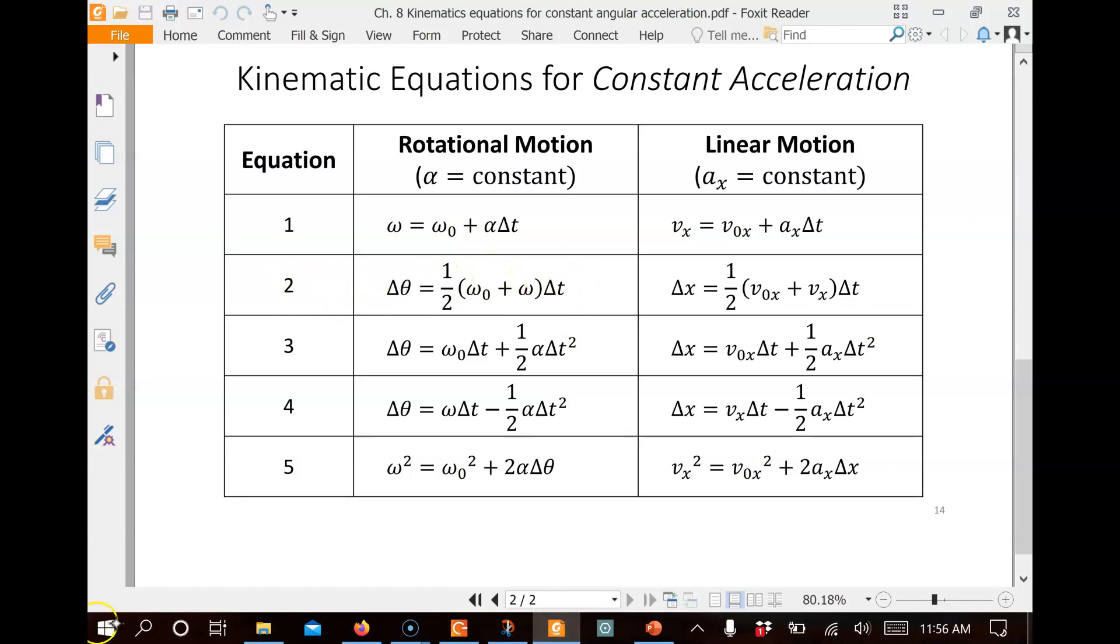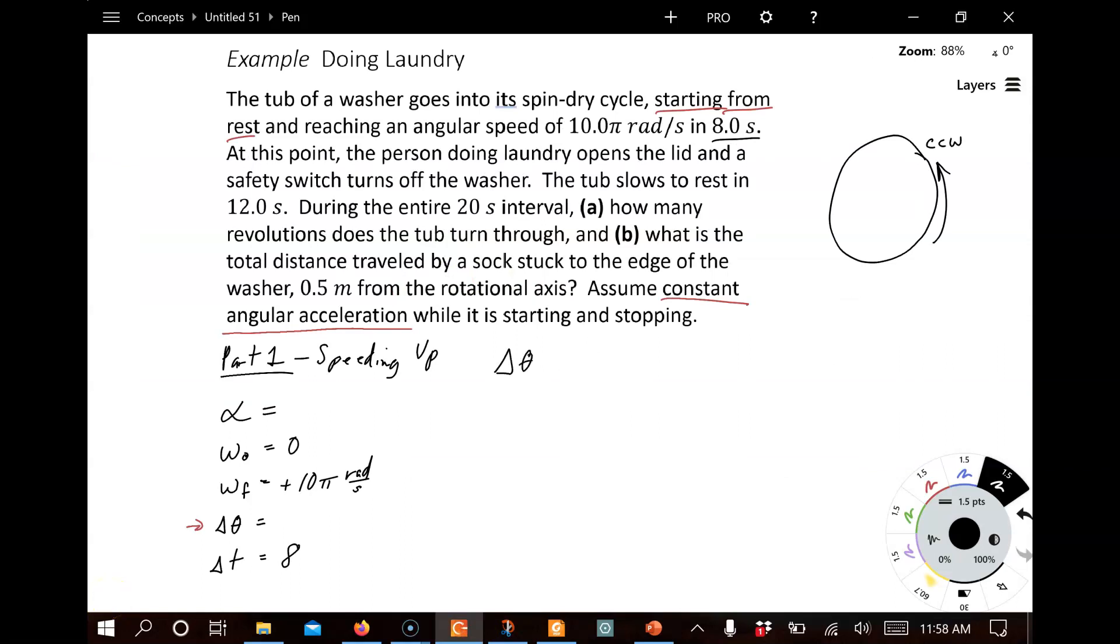Let's go ahead and write that down. So, Δθ equals one-half ω_initial plus ω_final times Δt. And we know that the initial angular velocity is zero. Simplify our equation a little bit. Δθ is equal to ω_final times Δt divided by two. And let's put our numbers in and solve for Δθ. So, ω_final is 10π rad/s. And that's going to be multiplied by eight seconds. And we're going to divide by two. And this one we can do in our head here. This comes out to, we cancel our seconds out. And we are left with 40π radians.